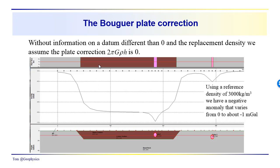So without information on the datum, having a datum different than 0 in the replacement density, we have to assume that the plate correction 2πGρh is going to be 0. So this would be our plate term. And since we don't really have any topography, I think we would be justified in assuming that there is no plate correction, no plate effect in this particular model.